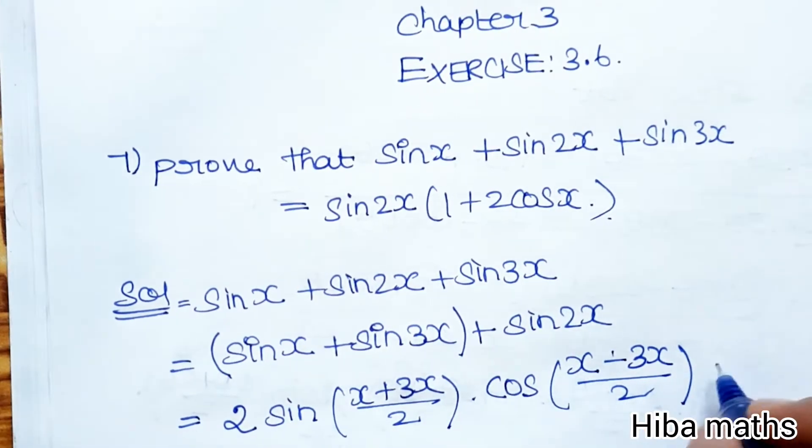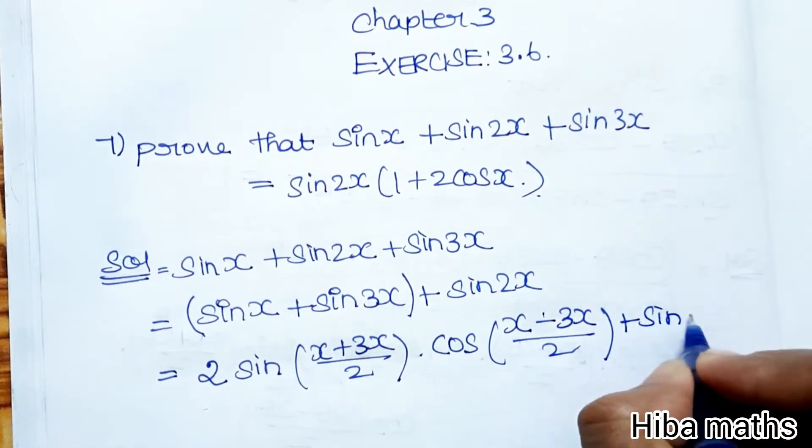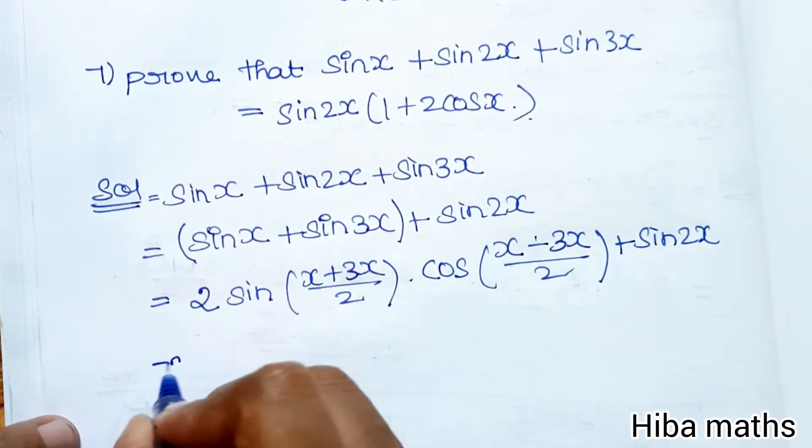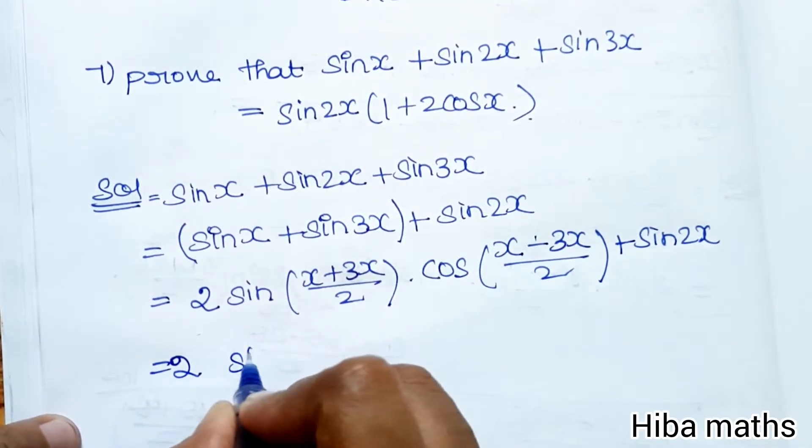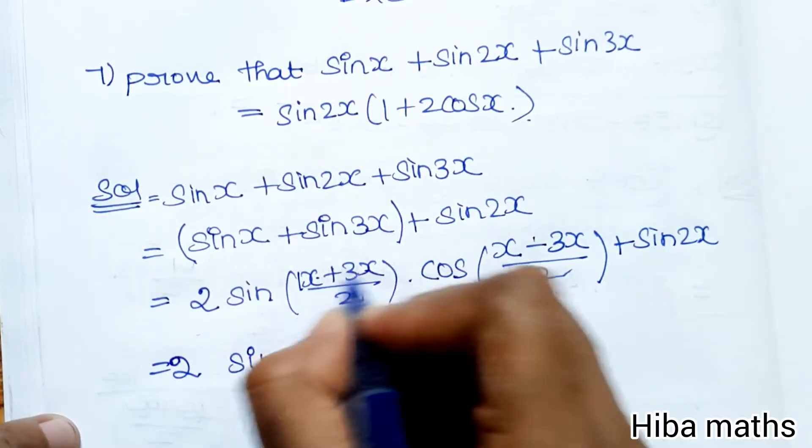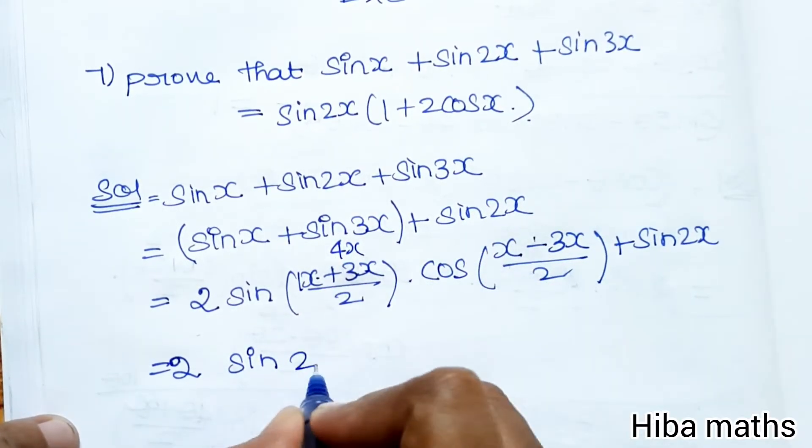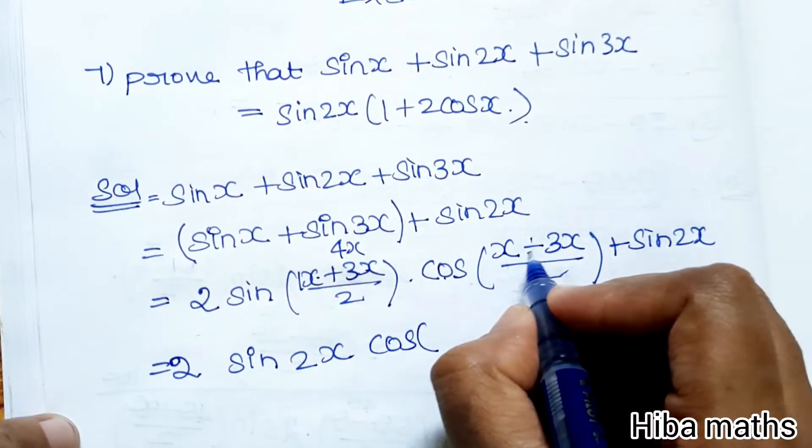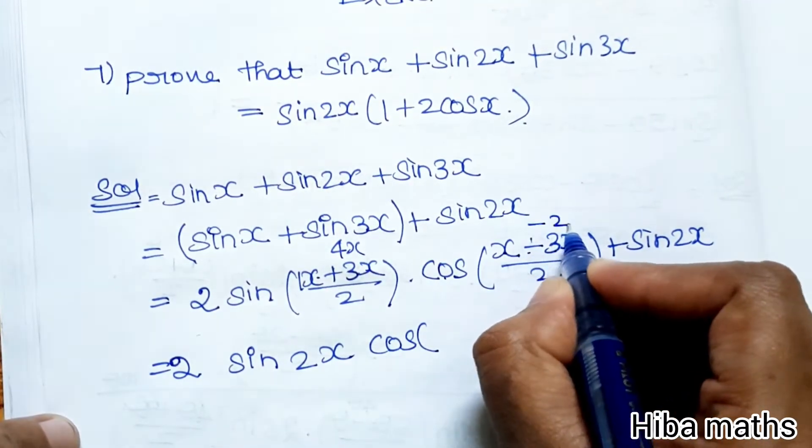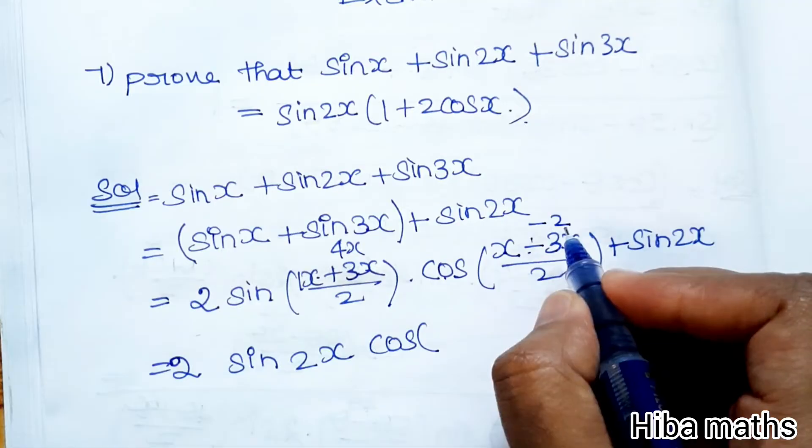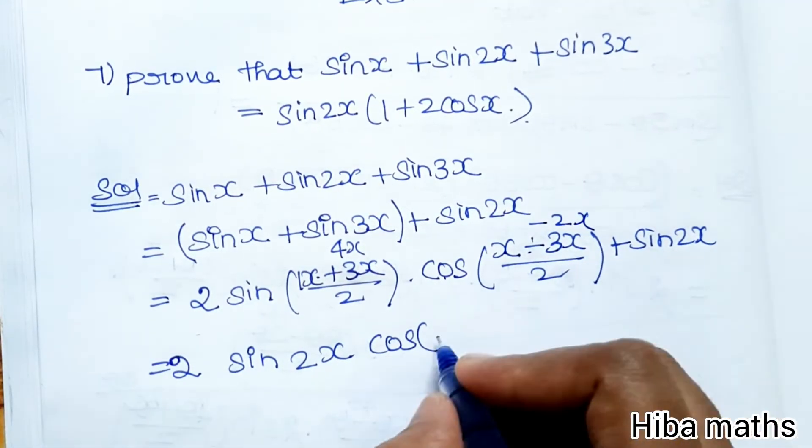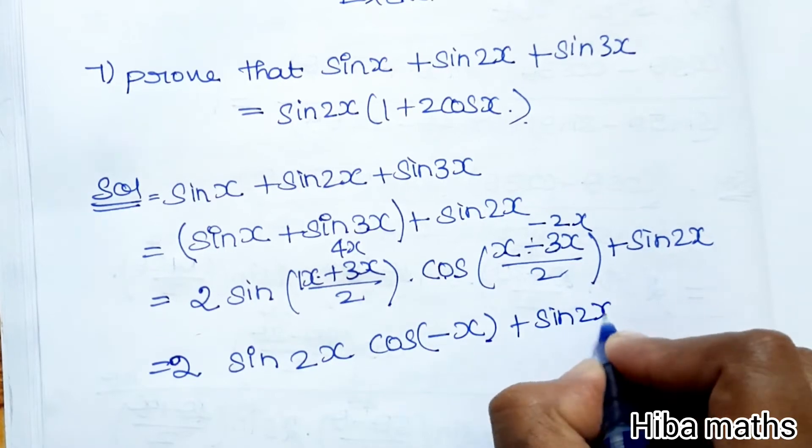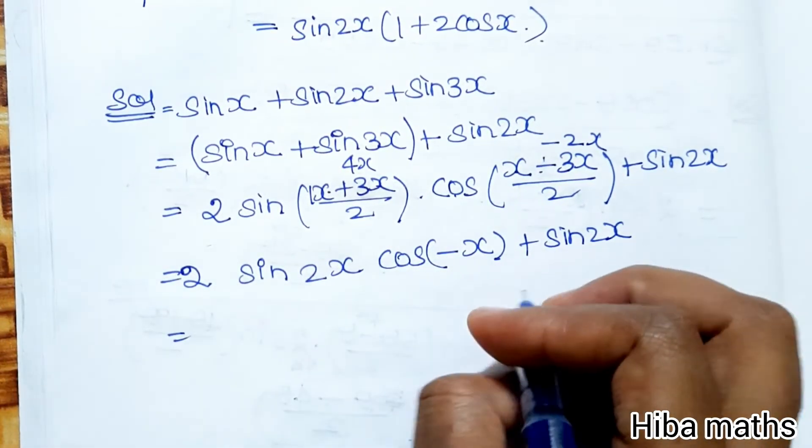Next line: 2 sin((x+3x)/2) cos((x-3x)/2). That's 2 sin(4x/2) cos(-2x/2), which equals 2 sin(2x) cos(-x) + sin 2x.